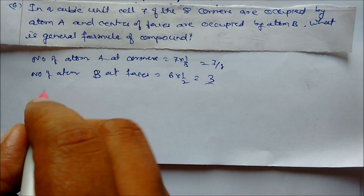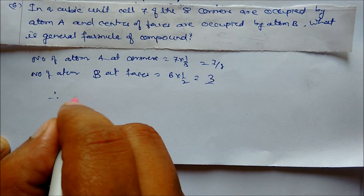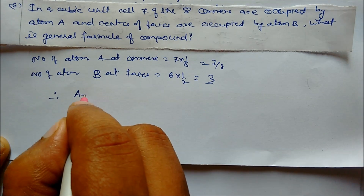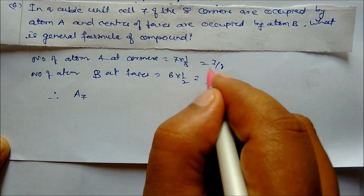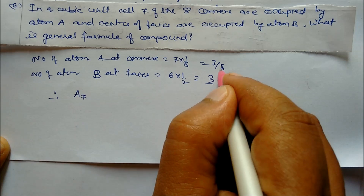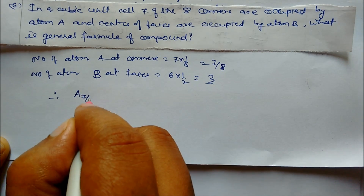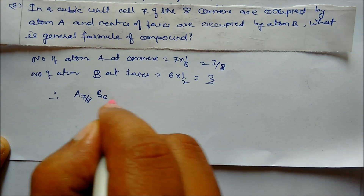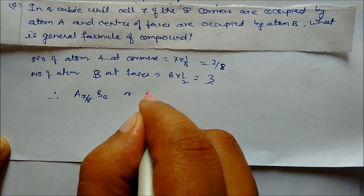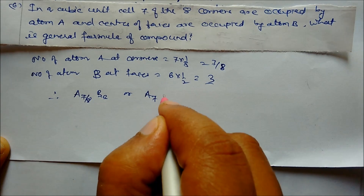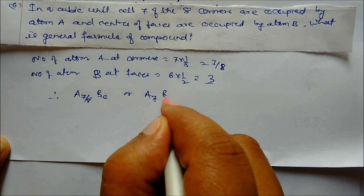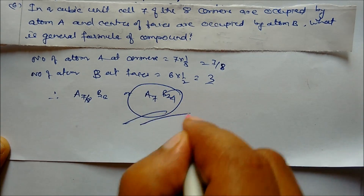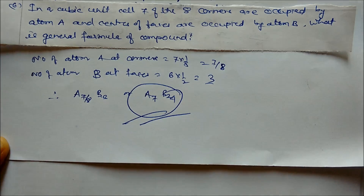So the formula is A(7/8)B₃, or multiplying through by 8, we get A₇B₂₄. This is our formula.